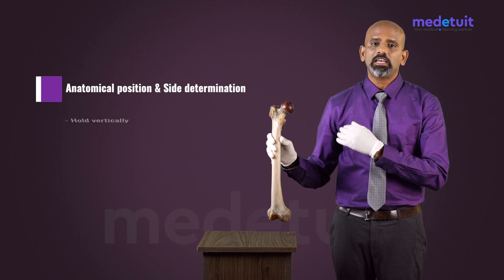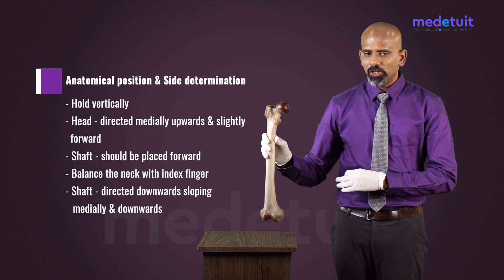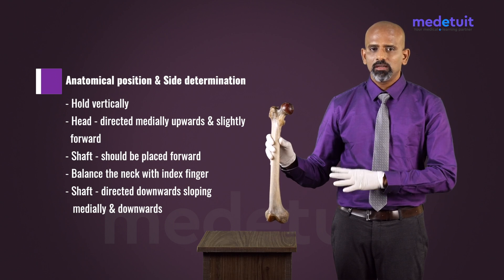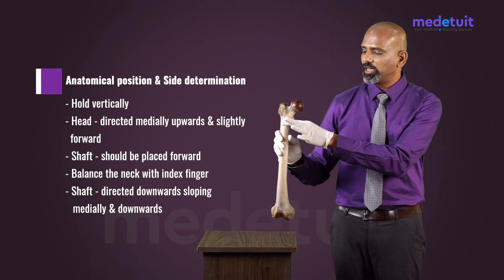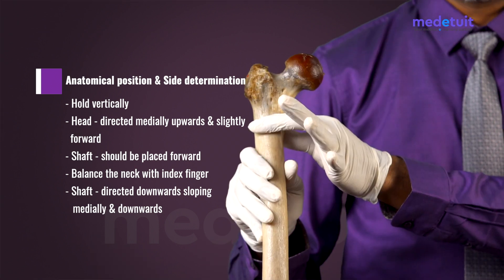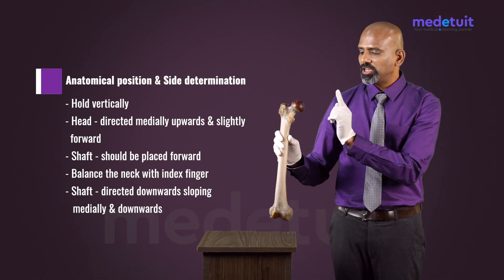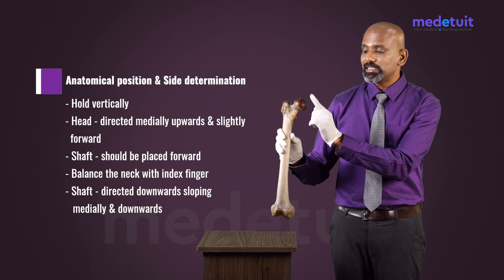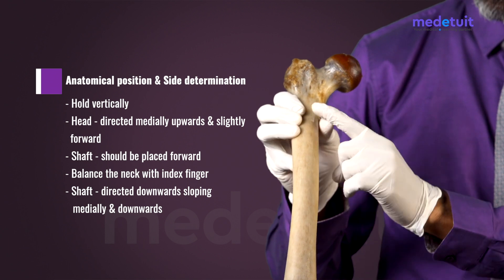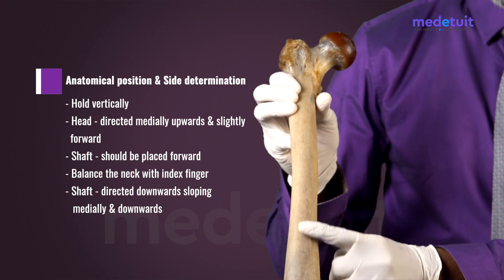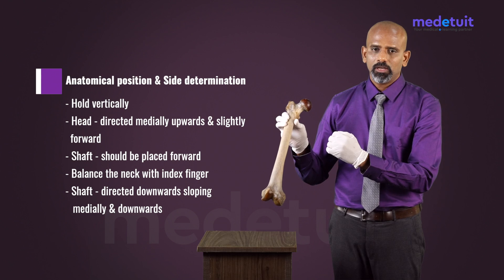Hold the bone vertically in such a way that the head, rounded, has to be located at the upper end and directed medially upward and slightly forward. The shaft will be having a convexity, and it has to be placed forward.